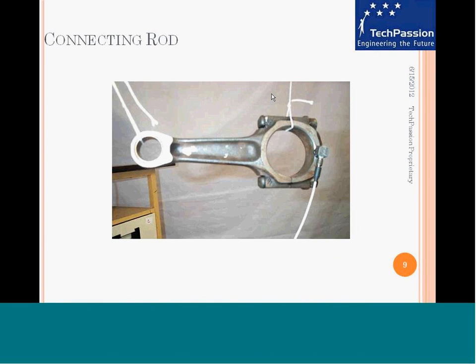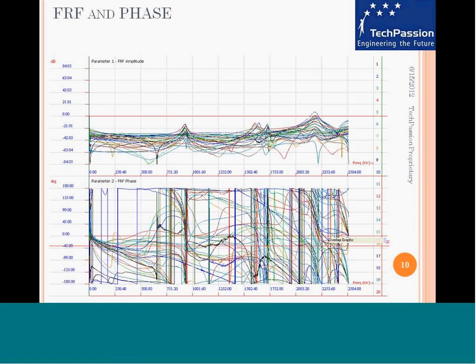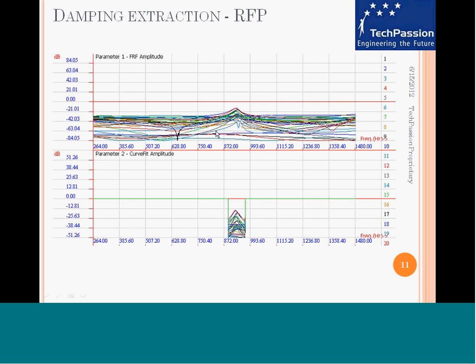Moving to the second component — the connecting rod. As seen in the experimental setup, an accelerometer is mounted on it and again we use an instrumented hammer to perform a single input, single output test. The computed frequency response functions show the amplitude and phase plots. After performing curve fitting using rational fraction polynomial technique, we extract the damping values. The amplitude versus frequency plot and the fitted curves match precisely with the experimental data.